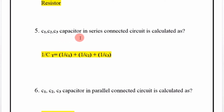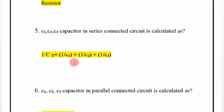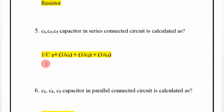For capacitors C1, C2, C3 in a series connected circuit, the total capacitance is calculated as: 1 over CT is equal to 1 over C1 plus 1 over C2 plus 1 over C3.